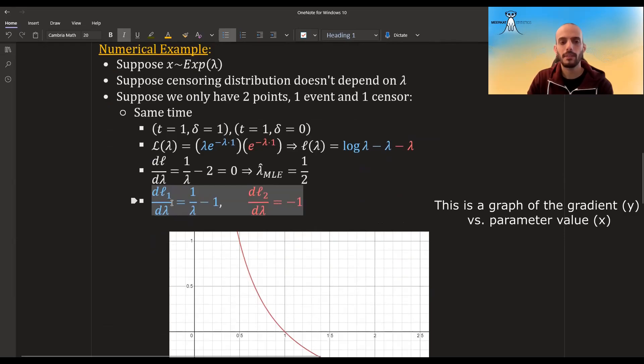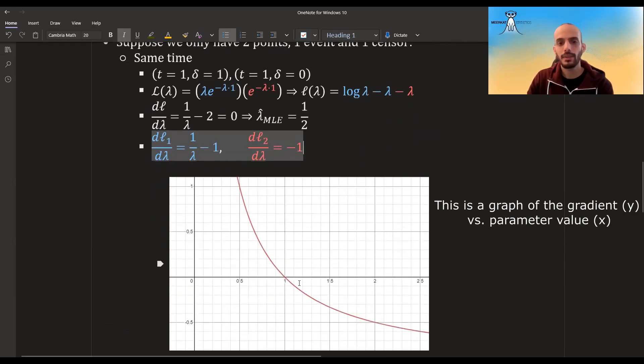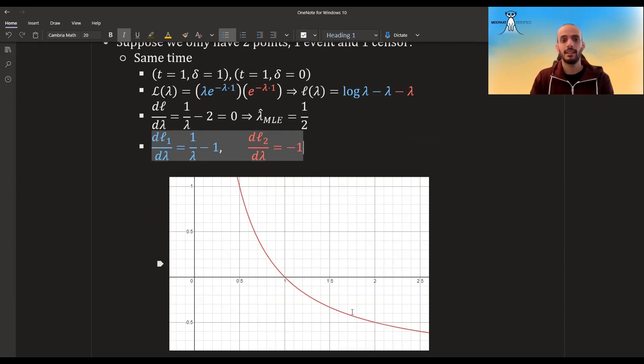So for the blue, you can see that it's kind of centered around one. If we have, if our point, if the parameter is bigger than one, it will try to push it downwards to one using gradient ascent. And if it's lower than one, it will try to push it back towards one.